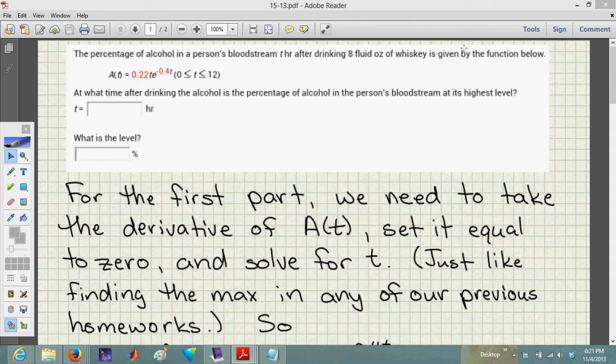Question 13 from homework 15. They're asking us about finding information about the percentage of alcohol in someone's bloodstream. They're giving us this function, A of t equals 0.22t times e to the negative 0.4t power. And they're asking us,